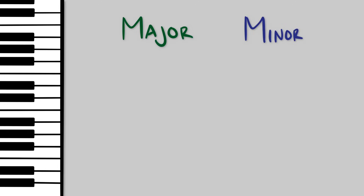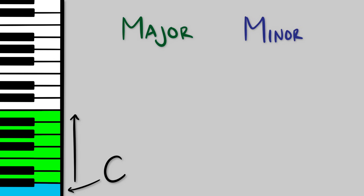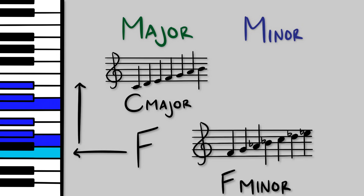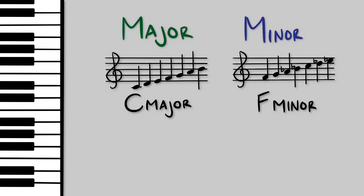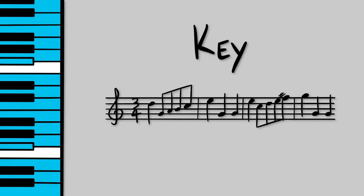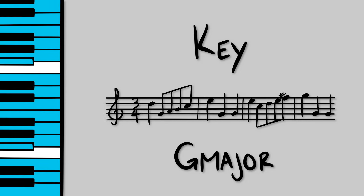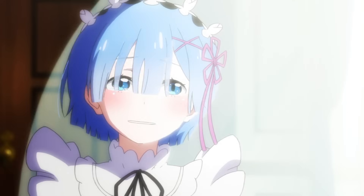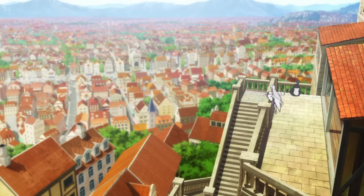Those two patterns are major and minor. If you start on a specific note and play the next notes according to one of these patterns, you get a specific scale. For example, if you start on C and play the next notes according to the major pattern, you get a C major scale. If you start on F and play according to the minor pattern, you get an F minor scale. If you were to write a song using only the notes available in a specific scale, that would help determine what's called the song's key. It's more complicated than that, but that's all you really need to know for now.